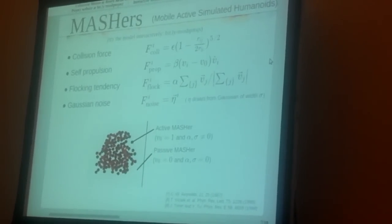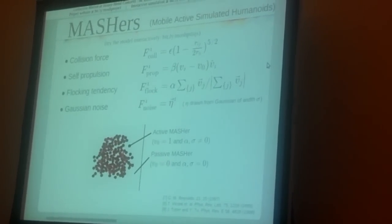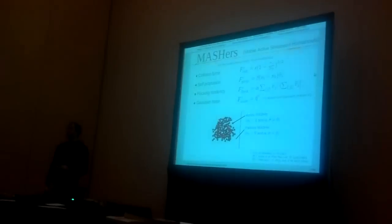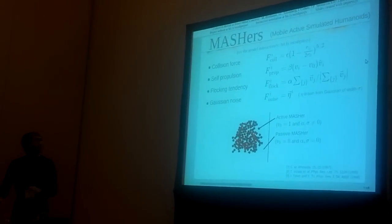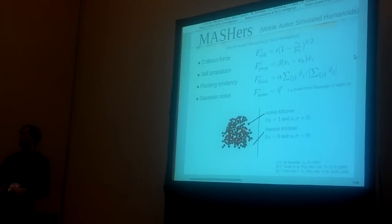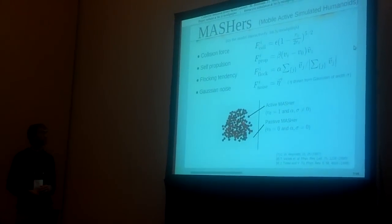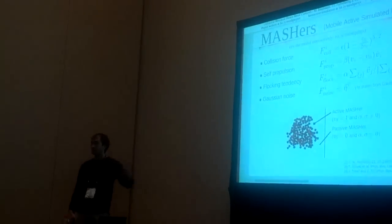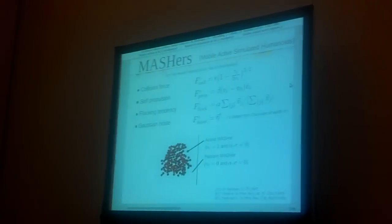We have this flocking tendency: if you look at all your neighbors and look where they're going, you also want to move in that direction, characterized by alpha. And then, finally, to take care of the bright flashing lights and loud noises — and let's face it, they're in the green — we have this noise term, characterized by sigma. If you ever go to one of these concerts, you know that there are people who don't like to participate and ones who do, so we have two populations. We call them active and passive.